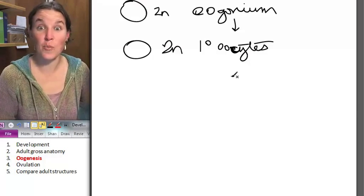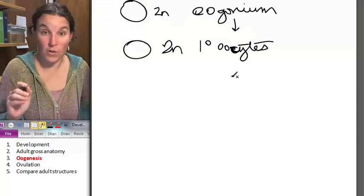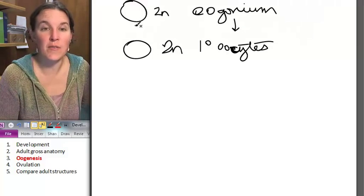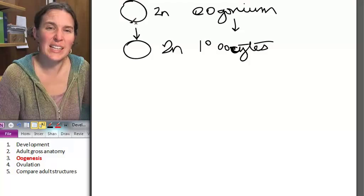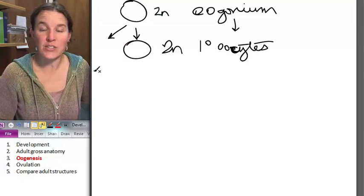So we produce our primary oocytes and we started with an oogonium and all that is is the process of mitosis. So really, you're going to end up with two from a single oogonium. And here's the deal.